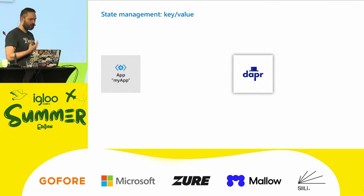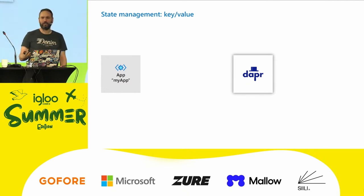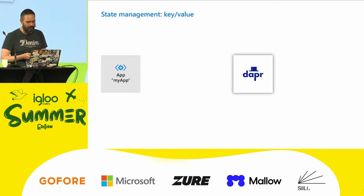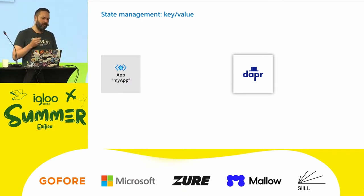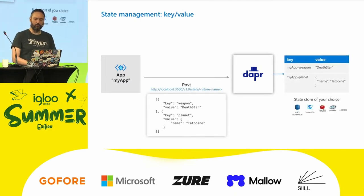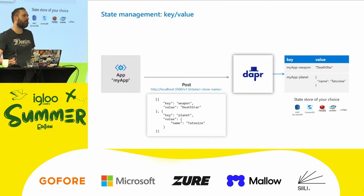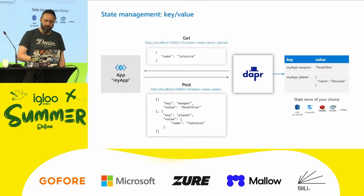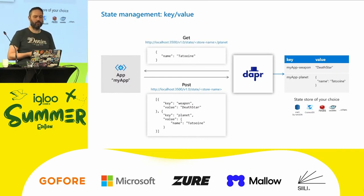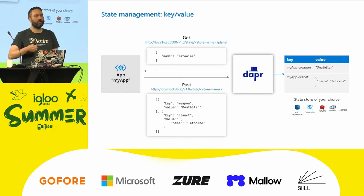Another building block is state management. This is not relational database state — it's really key-value pair state. The same thing can happen: as an application, I want to store something, so I post a list of key-value pairs and give a store name. Based on my configuration, this might be Cosmos, or Redis, or whatever state store is configured. And then, with the same state store and the key I used to store the data, I execute a GET and I get back the data that was stored previously.